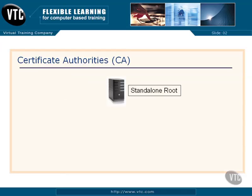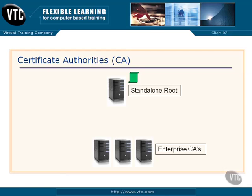Let's start off with a standalone. We install Active Directory, set up certificate services, and make this machine a certificate authority — it is a standalone root. We generate a certificate to apply to other machines. We may have gone to VeriSign or one of the other companies, paid them a fortune, and they are guaranteeing to the world that we are legitimate. That certificate is then applied to that machine.